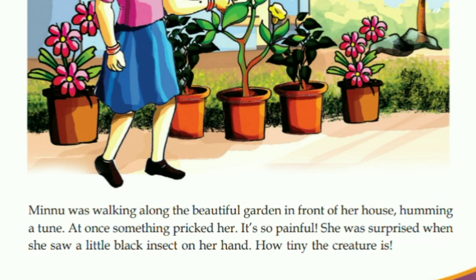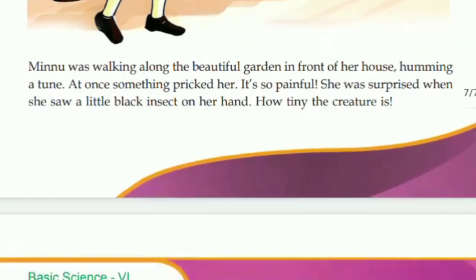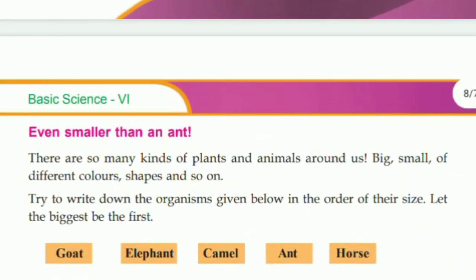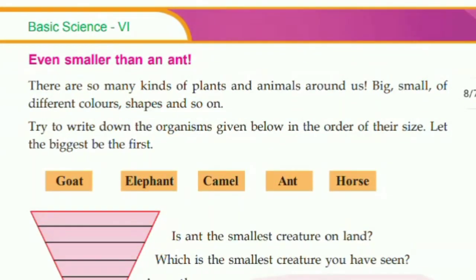She was surprised when she saw a little black insect on her hand. How tiny the creature is! There are so many kinds of plants and animals around us — big, small, of different colors and shapes.